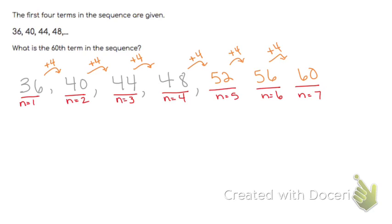So what if we didn't want to keep adding four and four and four until we get to the 60th term? We need to take a closer look at what is happening.